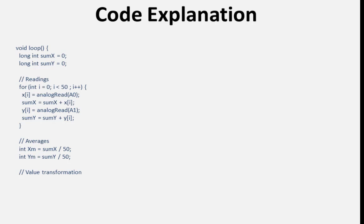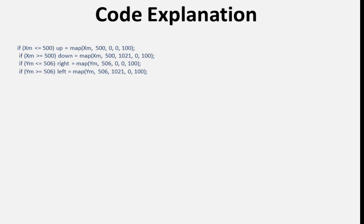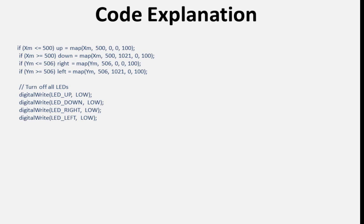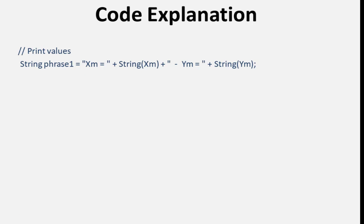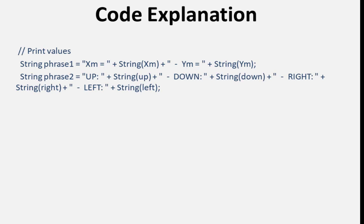This declares variables up, down, right, and left to store the transformed values representing joystick directions. It maps the average analog readings xm and ym to values between 0 and 100, representing the intensity of joystick movement in each direction. It then turns off all LEDs, and turns on the LED corresponding to the direction with the highest reading. Finally, it constructs strings with the average analog readings and transformed values and prints them to the serial monitor.